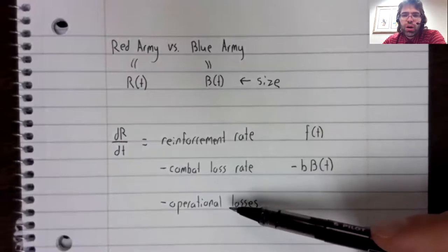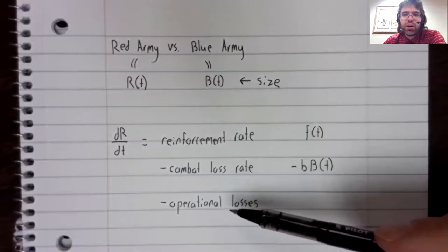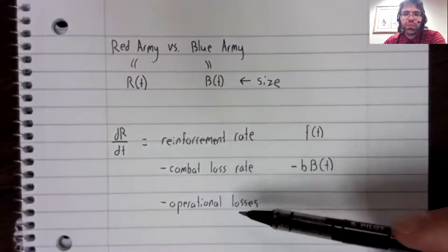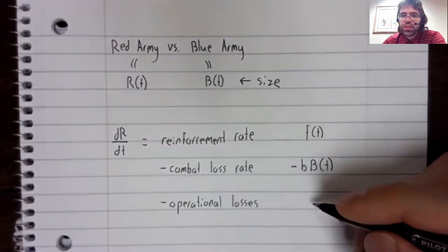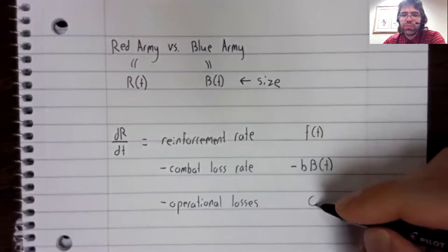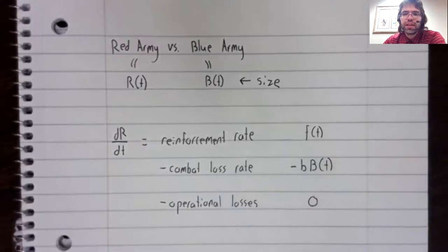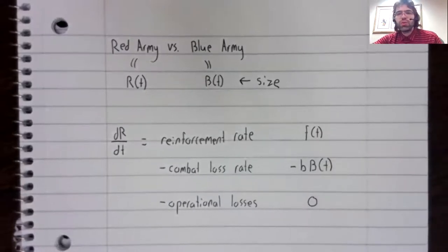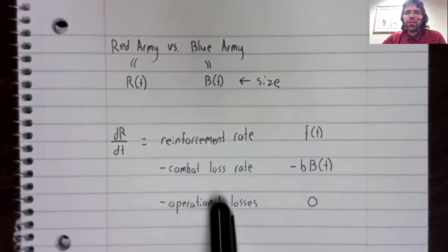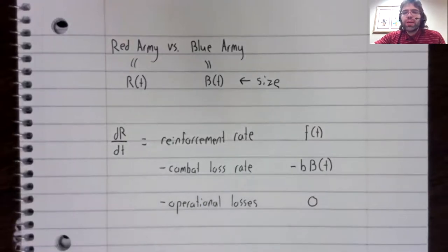Operational loss is incredibly complicated and hard to work with. And we will take the coward's way out and only look at encounters where the operational loss is zero. This is realistic for a lot of relatively short-term engagements. So if a battle lasts a month or so, we can probably get away with this. Although it depends on the situations of the battle.